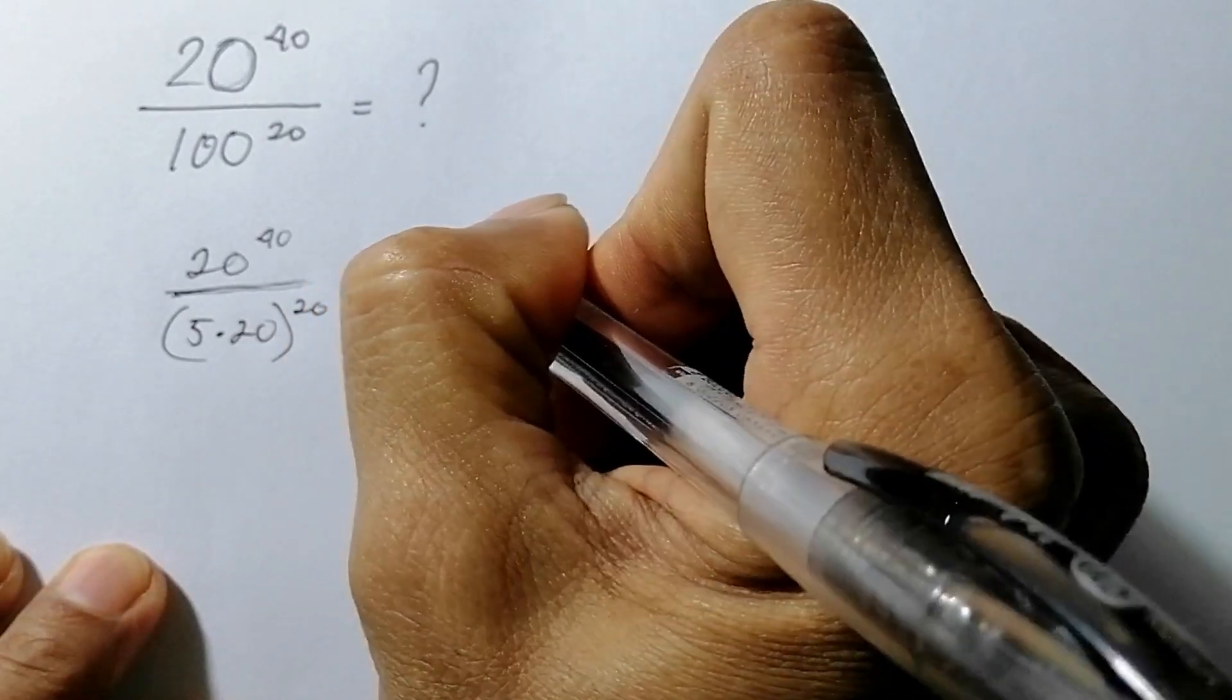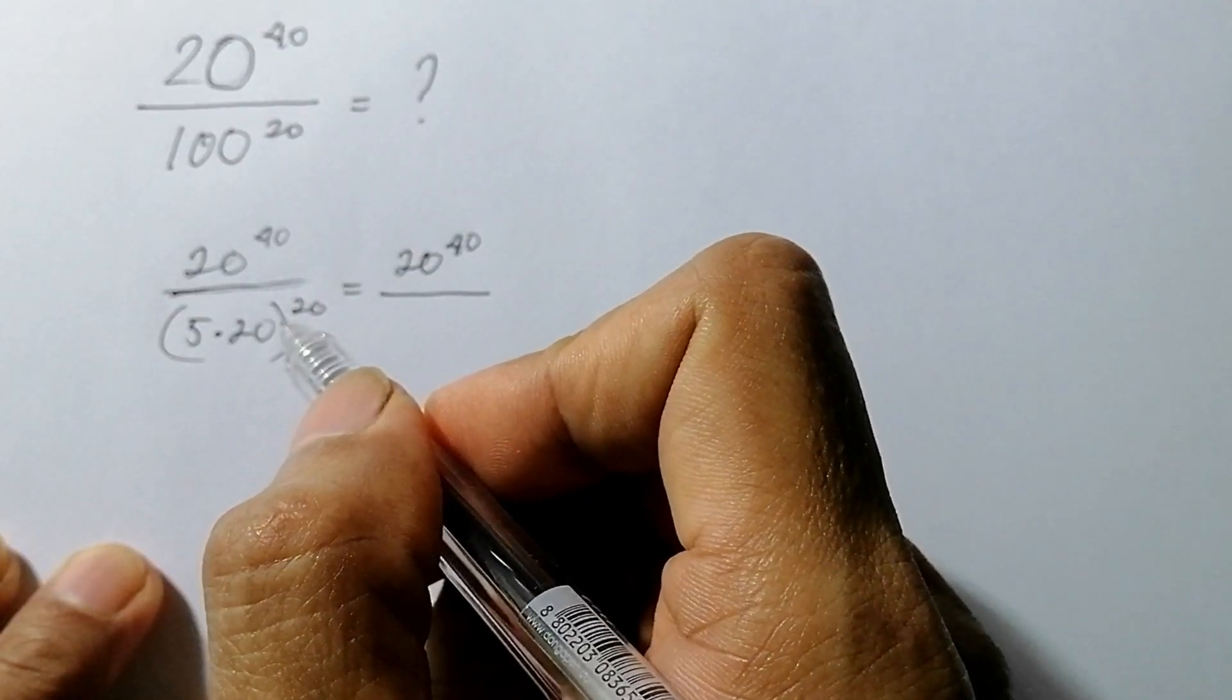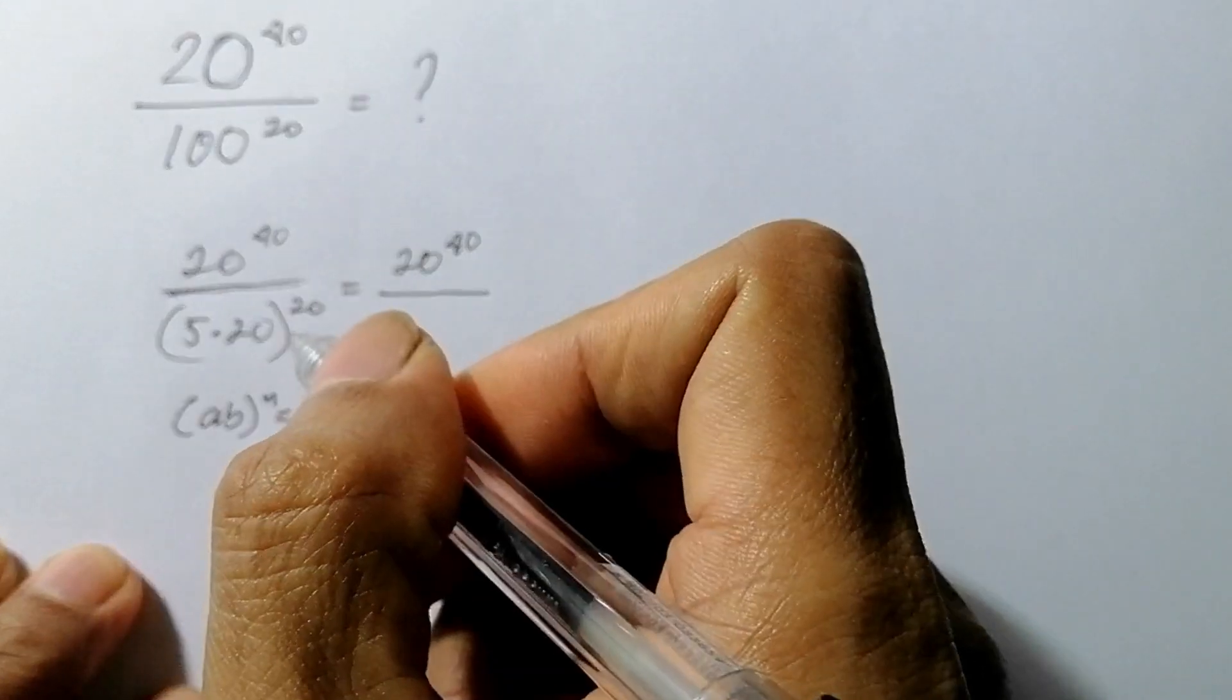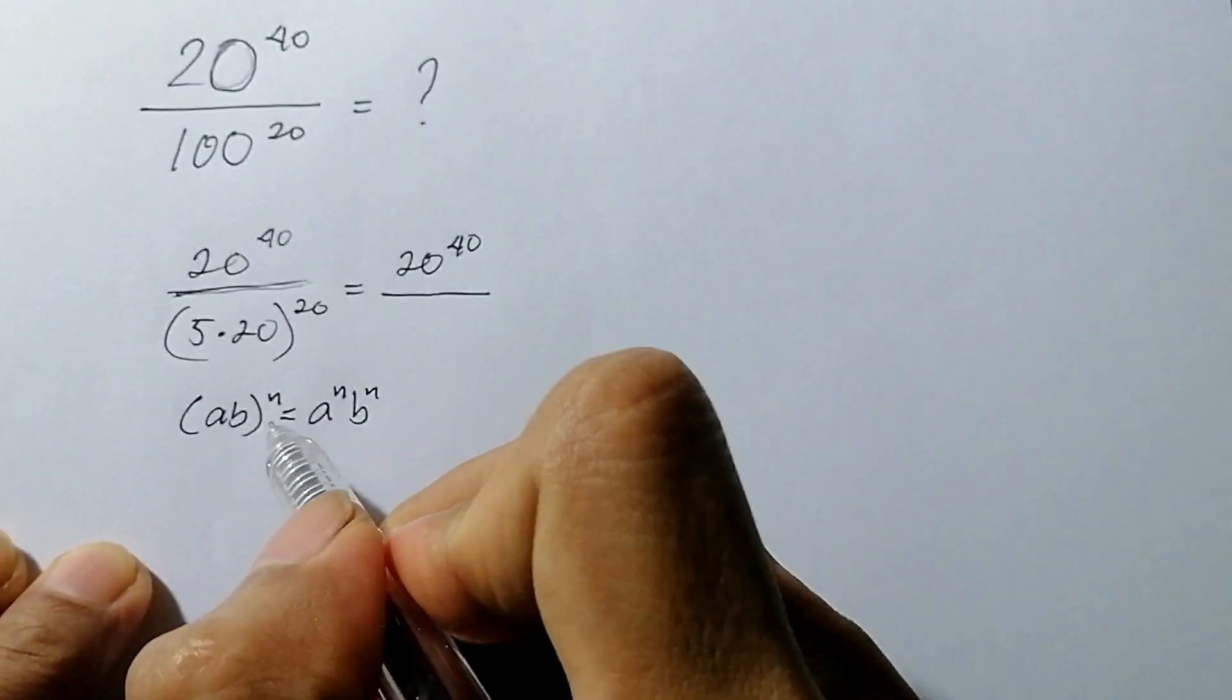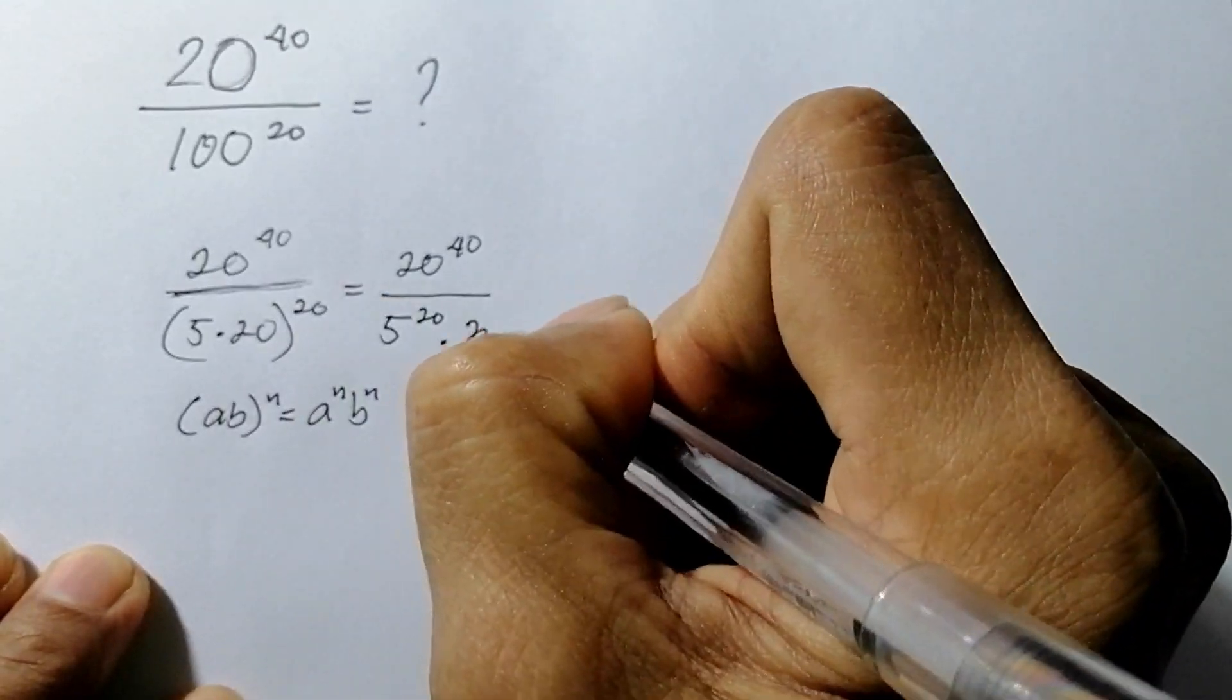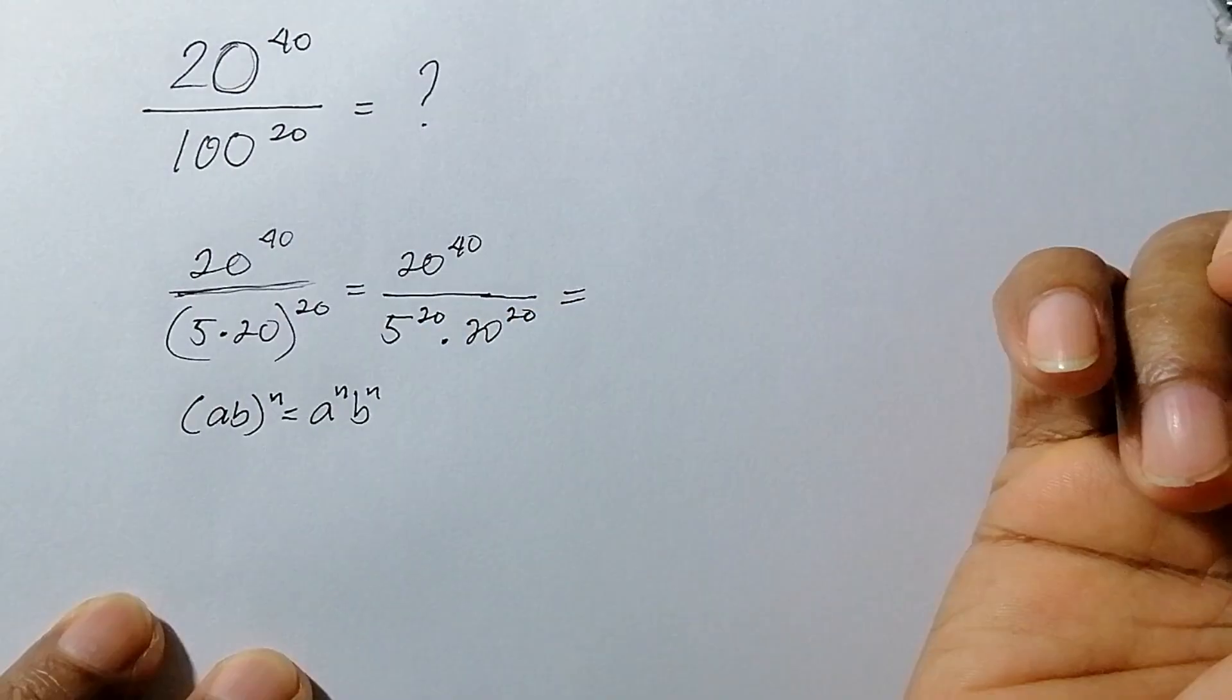This will be 20 raised to the power of 40. Using the product property of exponents, we write this as (ab)^n is equal to a raised to n times b raised to n. We apply this, so 5 to the 20 and then 20 raised to 20.